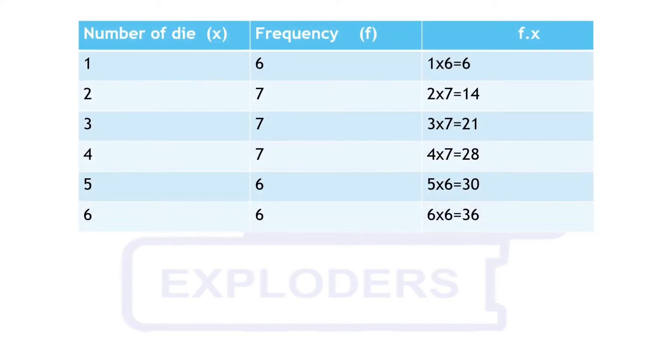Let's now calculate the average by making a frequency distribution table. One occurred 6 times, two occurred 7 times and frequencies of other numbers are mentioned in their front. In total there are 39 observations.